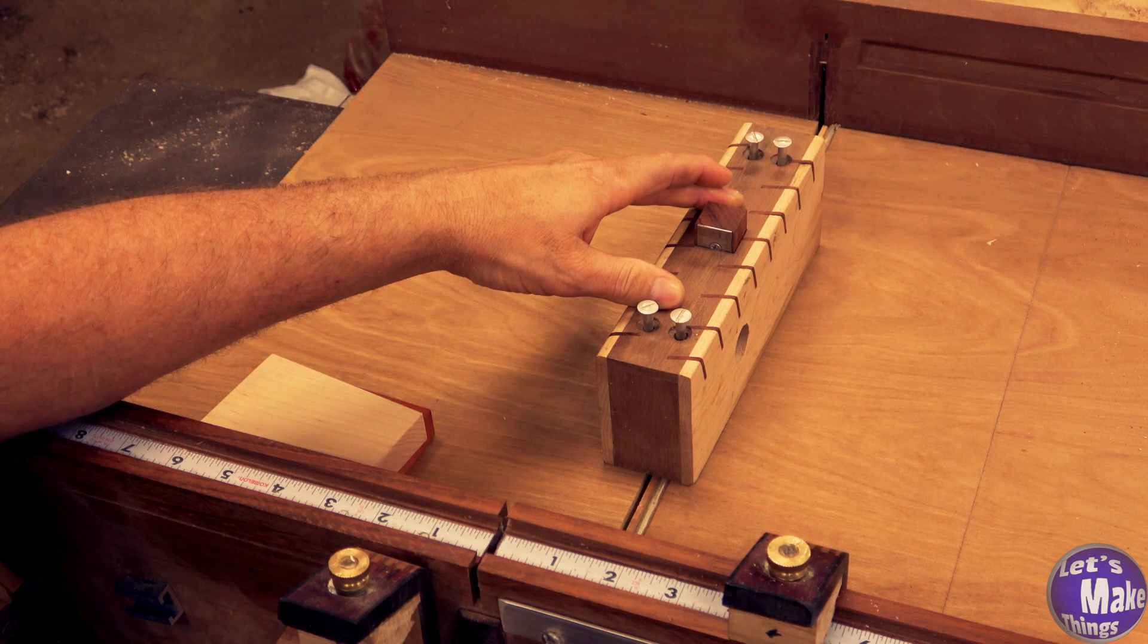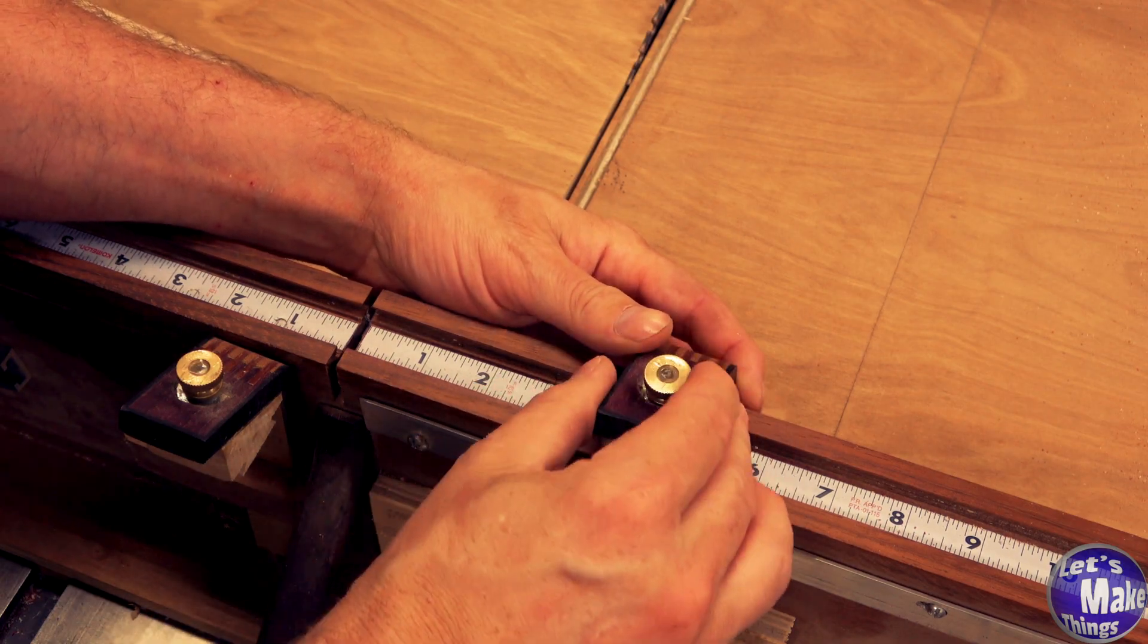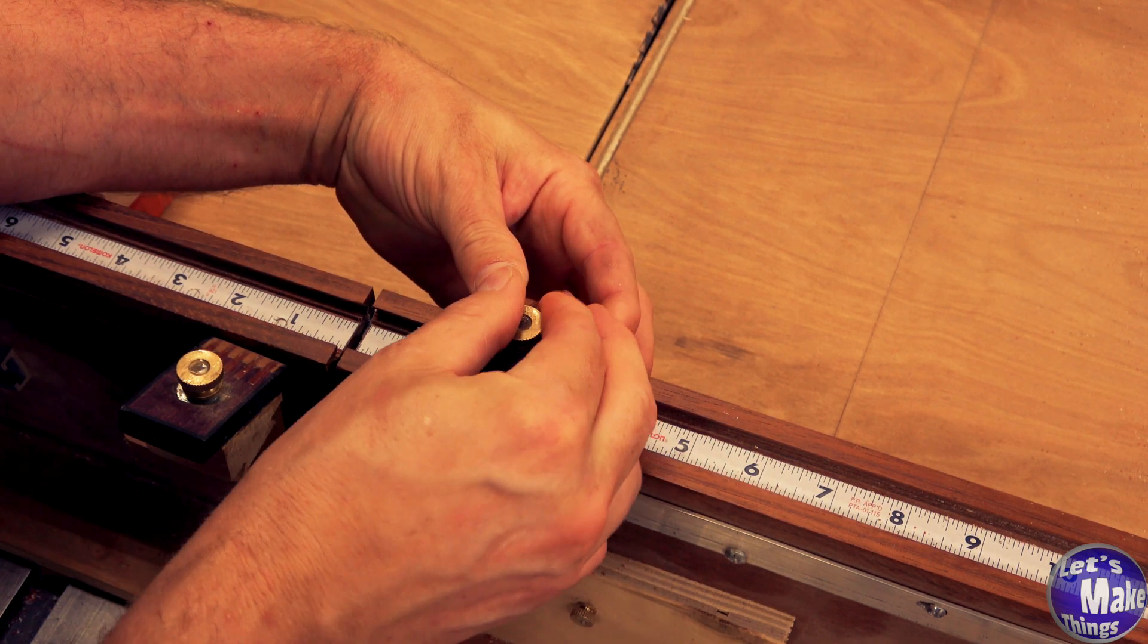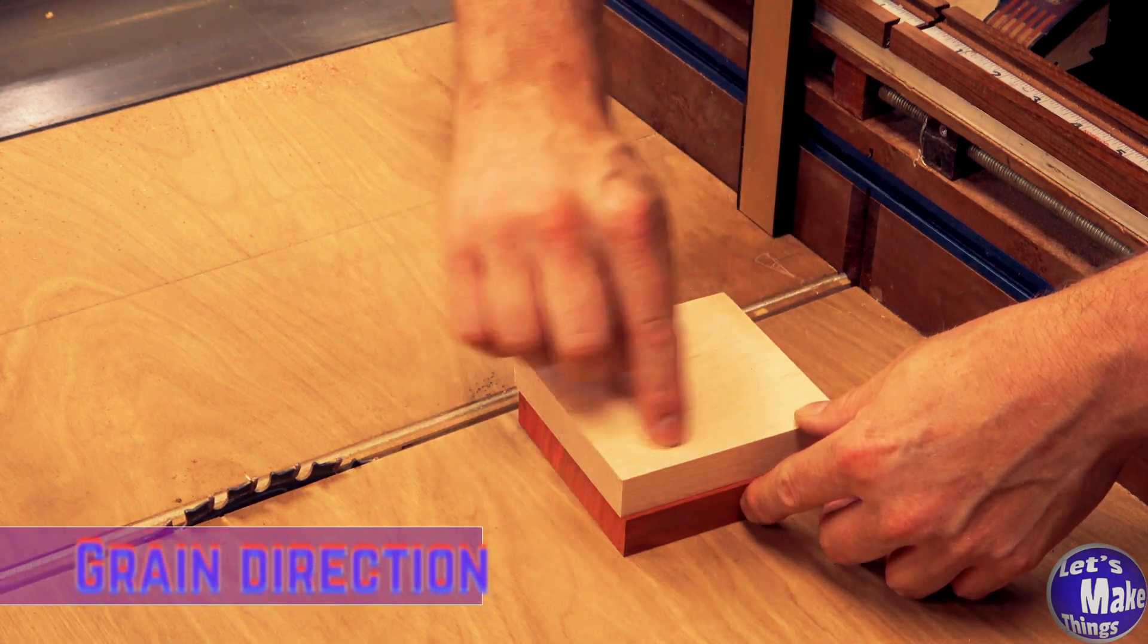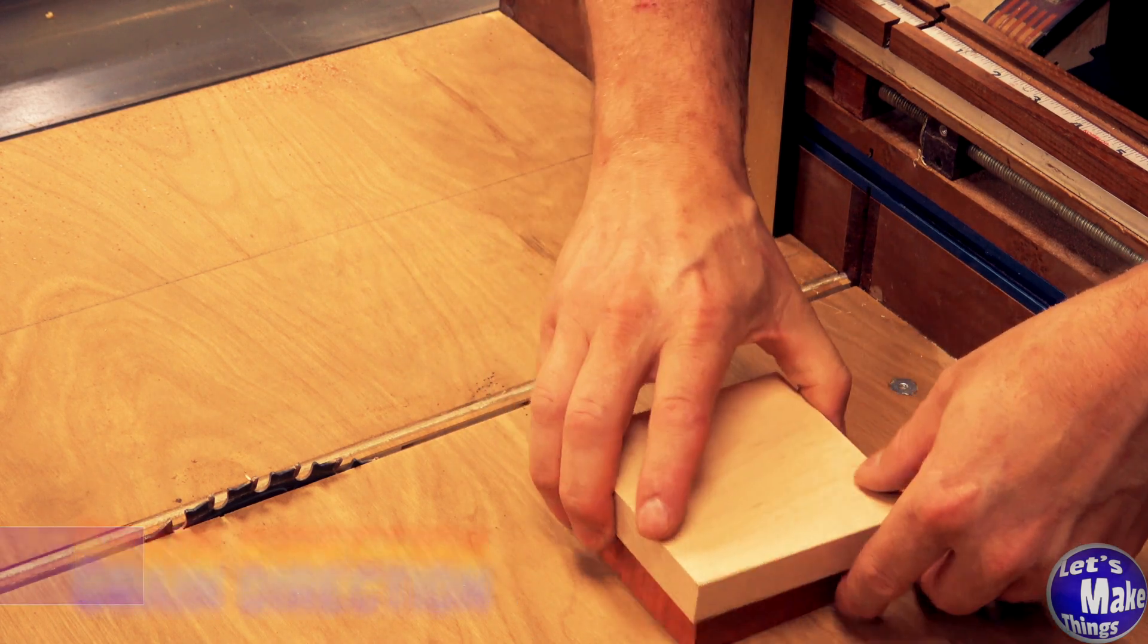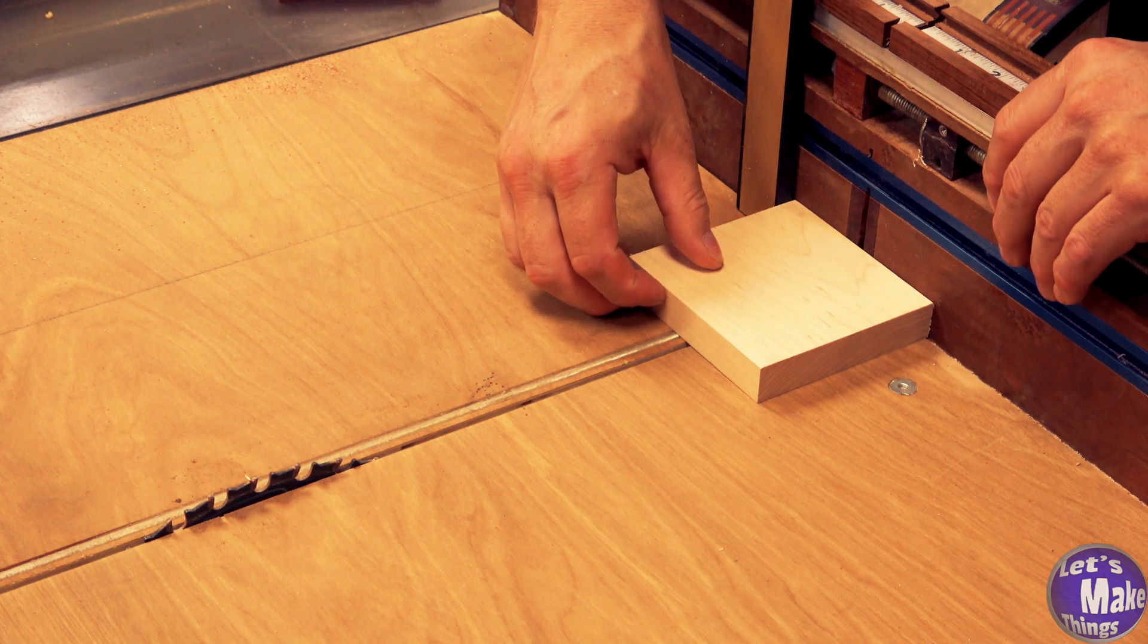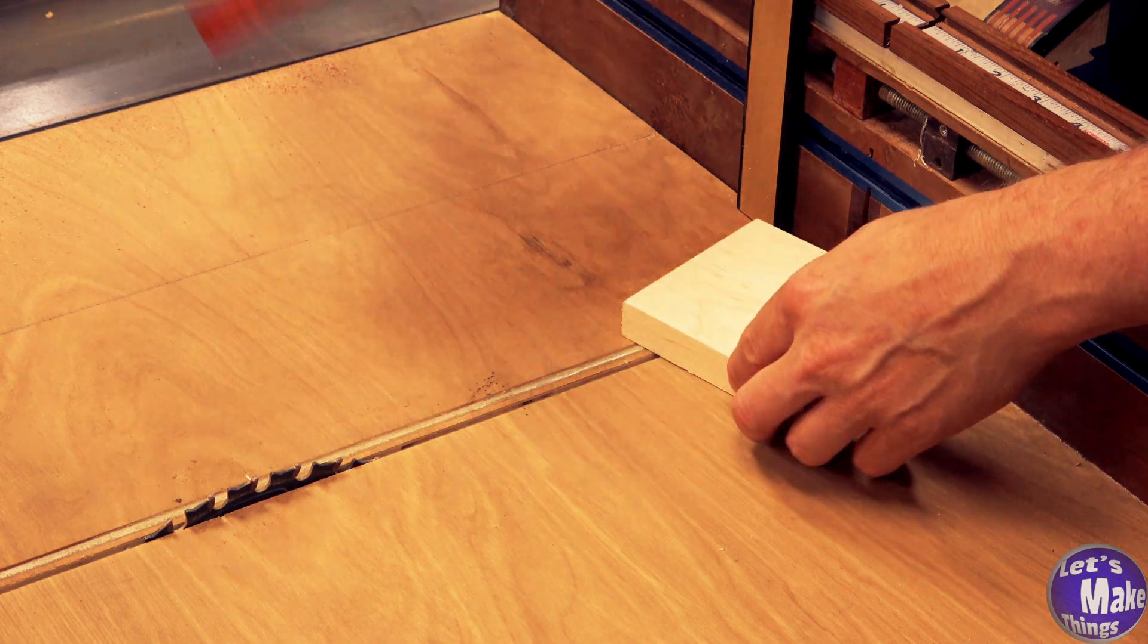I'm going to set my blade so that it's a half inch above the sled. I'll set my stop block at one and seven eighths. So if we're looking at these, the four inch that I'm going to use for the blades, the direction goes this way. I'll go ahead and make my first cut and I'll flip it, make the second cut, and I'll do the same with the second block.